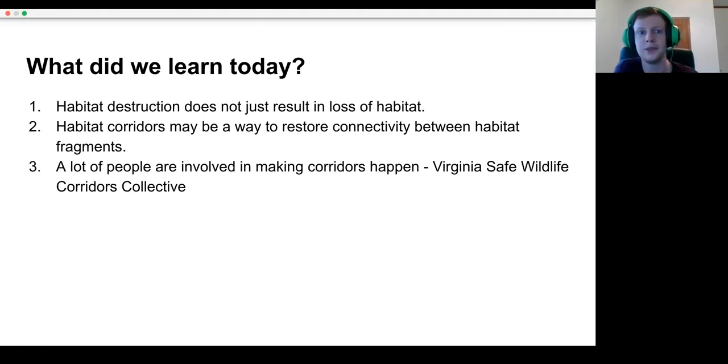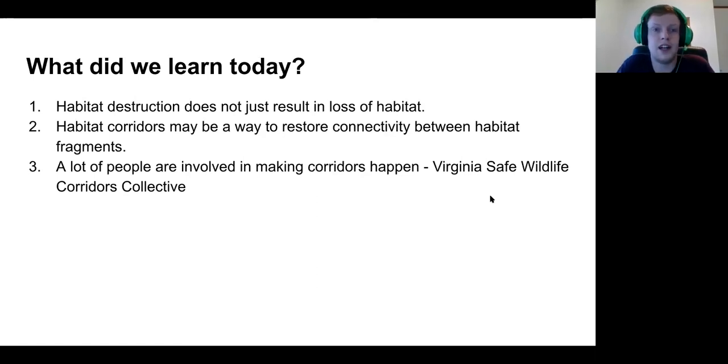So to cap off today, just want to reiterate that we talked about habitat loss and that the destruction does not just result in loss of habitat, it also creates fragmentation. And that habitat corridors are a really good way to fix fragmentation to a point, and that you have lots of groups who are really trying to do this and are actively working together to try and fix these problems that are pretty complicated. Not one group of people can fix it on their own.